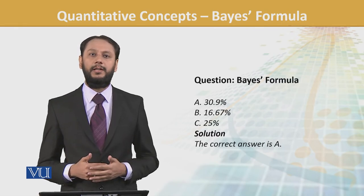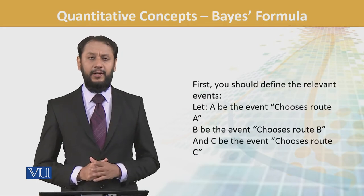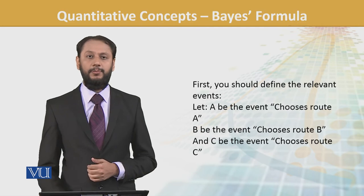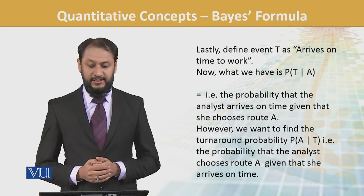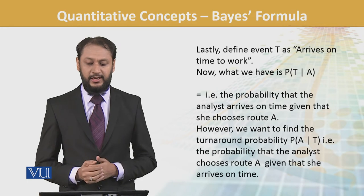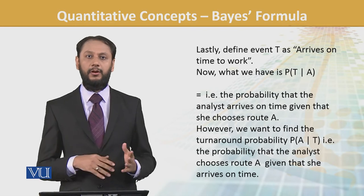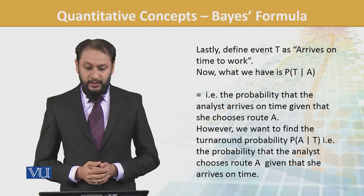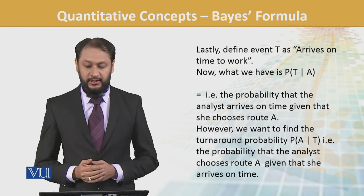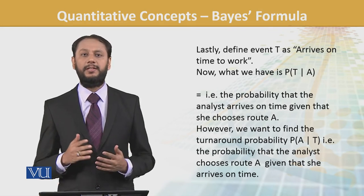We will see how it is being calculated through the conditional probability using the Bayes formula. First, define the relevant events: let A be the event she chooses route A, B be the event she chooses route B, C be the event she chooses route C. Let T be the event she arrives on time to work. We want to find the probability of A given T - the probability she chose route A given that she arrived on time.